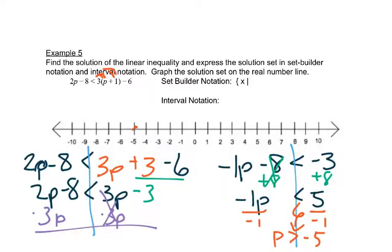So here's our negative 5. P is opening to the p, so p is bigger, so we want to go in the positive direction from negative 5. And it just says greater than, so we'd have a parenthesis there.